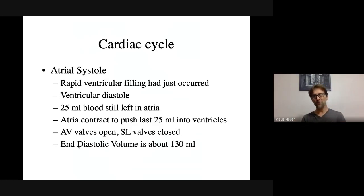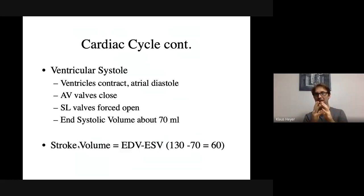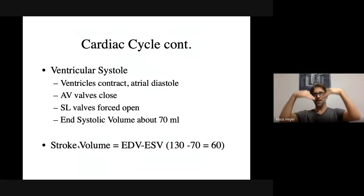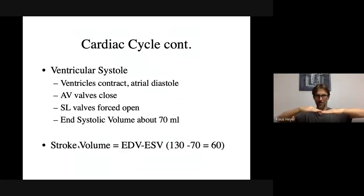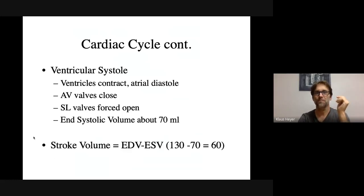Now the blood's out of the atria and in the ventricle. The ventricles are going to contract — they start squeezing. There's a valve leading back up into the atrium — the AV valve — which can only go one way, so it closes. And instead, the semilunar valves are going to pop open and that blood is going to leave.